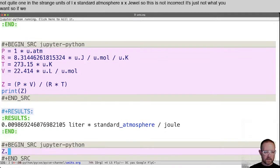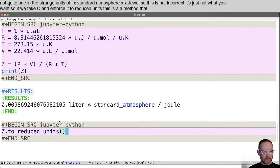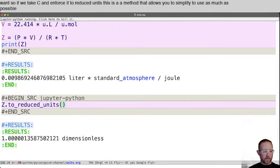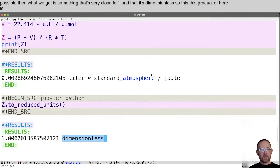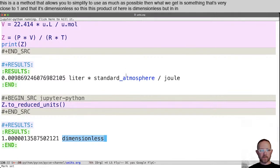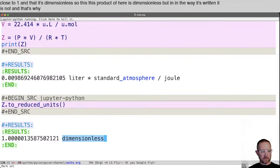So if we take Z and force it to reduced units, this is a method that allows you to simplify these as much as possible. Then what we get is something that's very close to one and that it's dimensionless. So this product up here is dimensionless. But in the way it's written, it is not. And that's why we see the units here, the units here and this magnitude not being one.